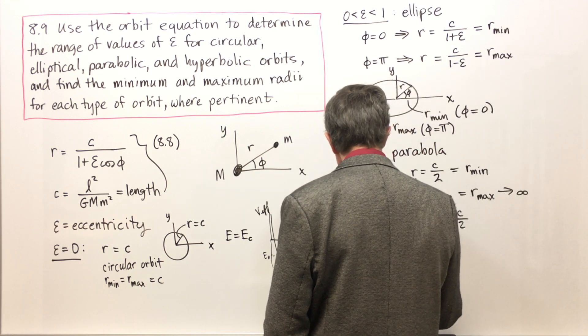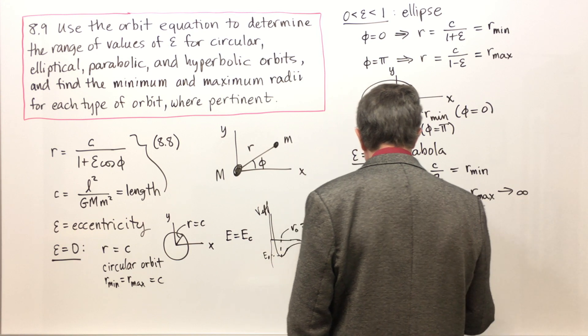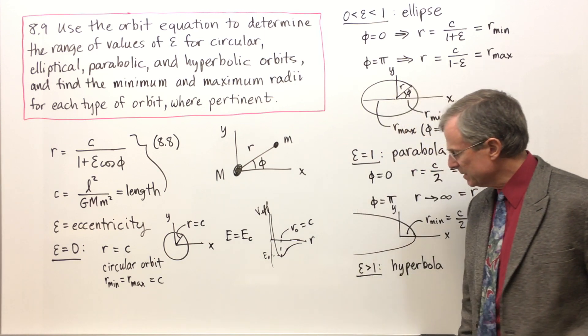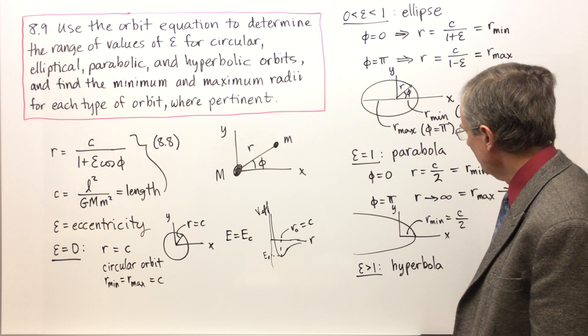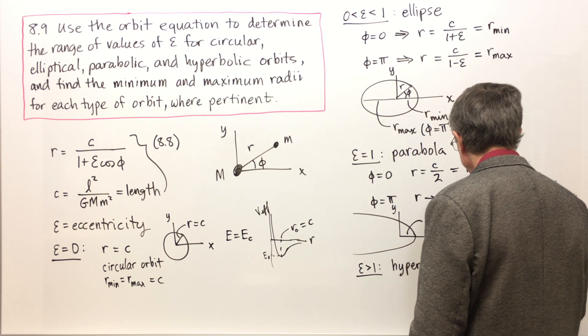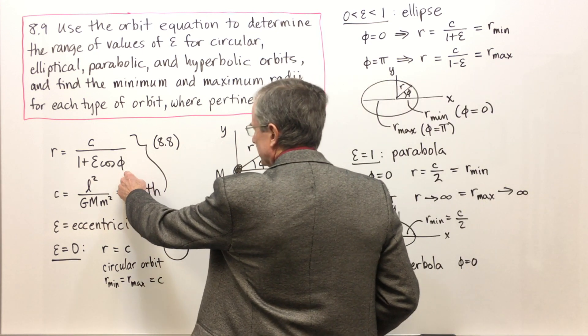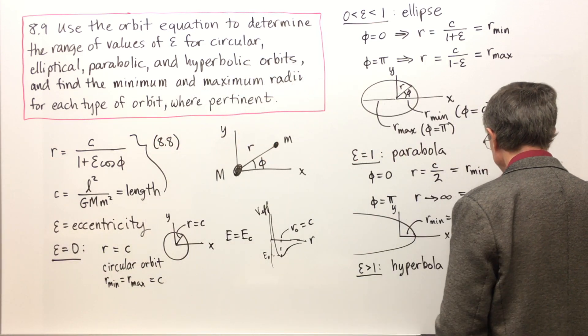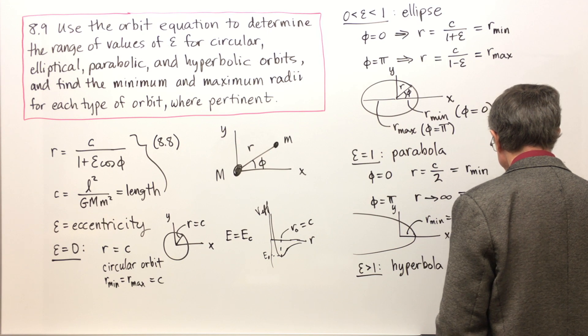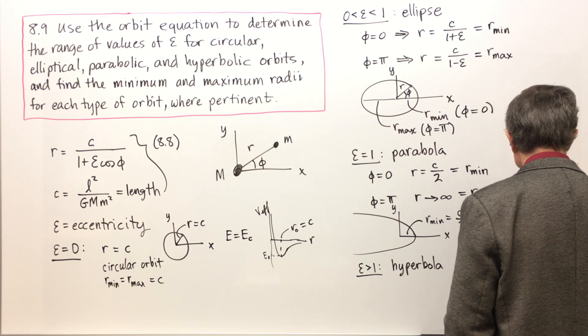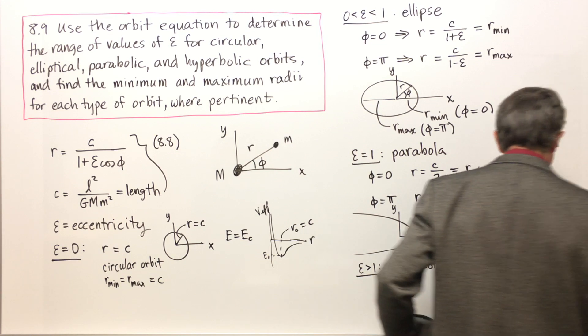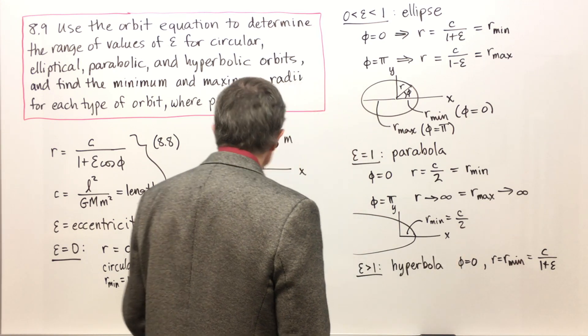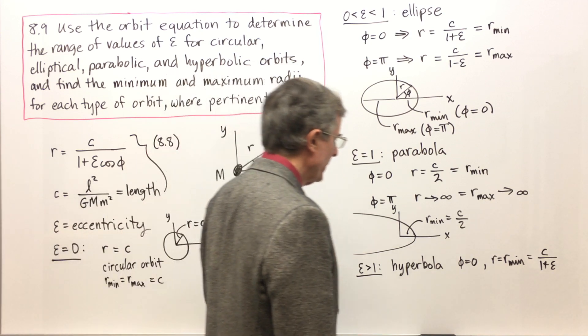Finally, epsilon greater than one. This is going to turn out to be a hyperbola. A hyperbola has asymptotes, and we will go about trying to find those now. Phi equals zero: cosine of phi is one, so R is C over one plus epsilon. There's our minimum R.